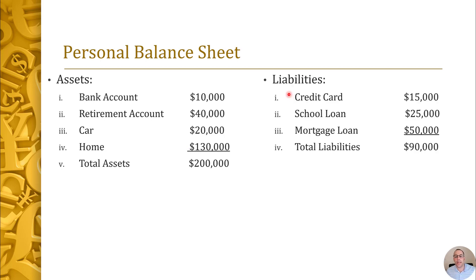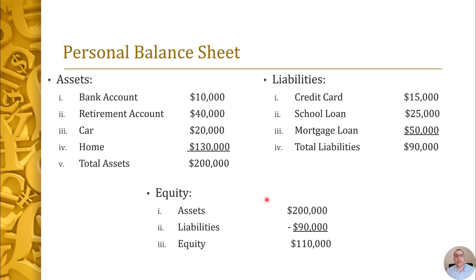Then list your liabilities — on top the liability due earliest, on the bottom the latest. So on top: your credit cards due each month; then a school loan due monthly with a five-year maturity; then your mortgage due monthly with a 30-year maturity. Say liabilities total $90,000. If you sell the home and get $130,000 after fees, and then give $50,000 to the bank to release the lien, you have $80,000 left over. So your personal balance sheet: $200,000 in assets minus $90,000 in liabilities equals $110,000 of equity.